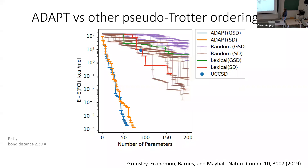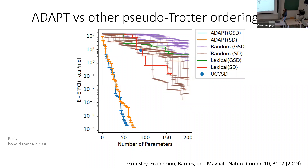Looking at the performance of ADAPT versus other pseudo-Trotter type algorithms: the ADAPT procedure outperforms both random operator ordering and lexical ordering approaches. While all approaches can ultimately reach chemical accuracy, the ADAPT procedure does so using far fewer parameters — very quickly and efficiently. UCCSD requires significantly more parameters than ADAPT to reach the same chemical accuracy.